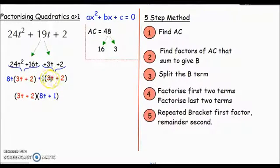The repeated bracket, that's our first factor, and the remainder outside—the bits left behind—will be our second bracket: (3t + 2)(8t + 1). I hope that helps and I hope you can follow that method. I promise you it's really handy when you come on to harder factorizing questions, so well worth learning.